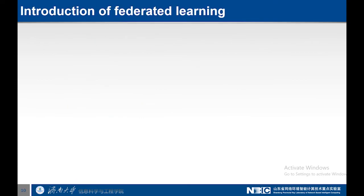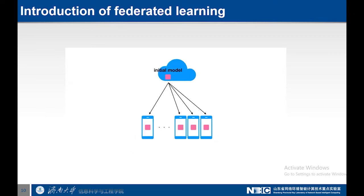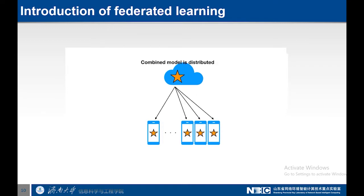Before going further, let me give you an overview of how federated learning works, and then I will explain how we use the federated learning system to deploy the privacy preserving technique during the training process. In federated learning, there is a server — a curator — that sends an initial model to each client, which does the training process using its own client dataset. After training, the client sends the updated model back to the curator server, which combines all the models and after computation sends it back to all connected clients.